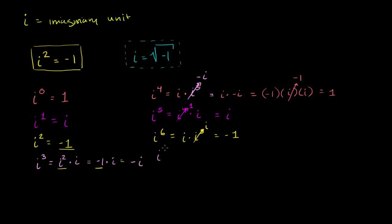i to the seventh power is equal to i times i to the sixth power. i to the sixth power is negative 1. i times negative 1 is negative i. And if you take i to the eighth, once again, it'll be 1. i to the ninth will be i again, so on and so forth.